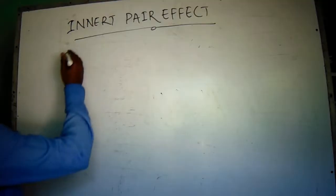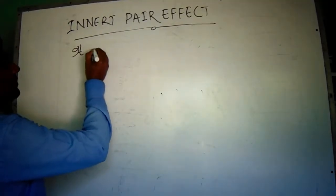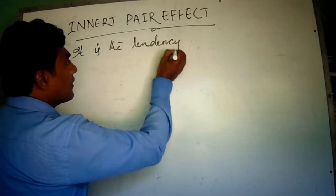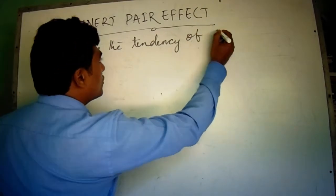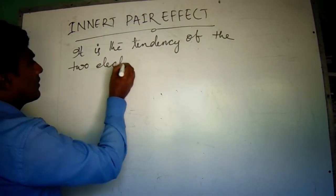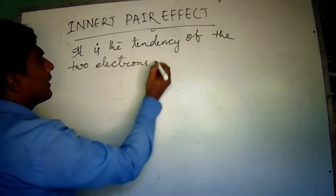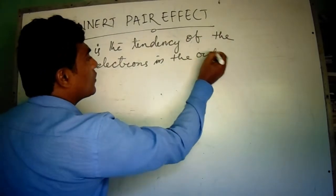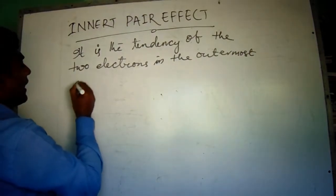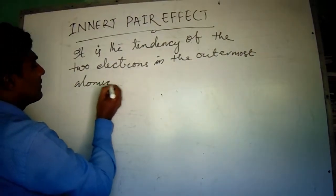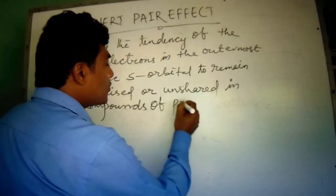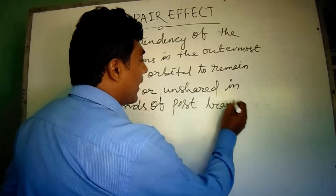It is the tendency of the two electrons in the outermost atomic S orbital of post-transitional elements.